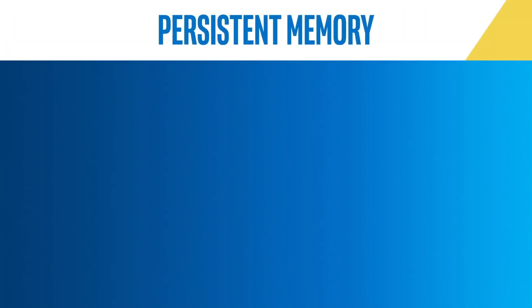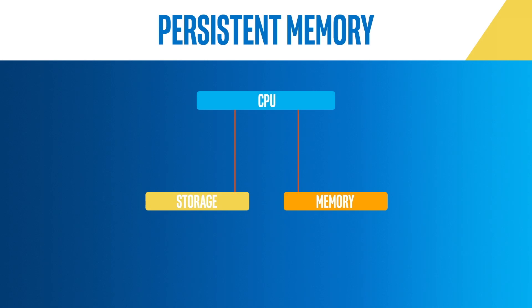But what really makes persistent memory stand out is that it's fast enough to access directly from the processor without stopping to do the block I/O required for traditional storage.